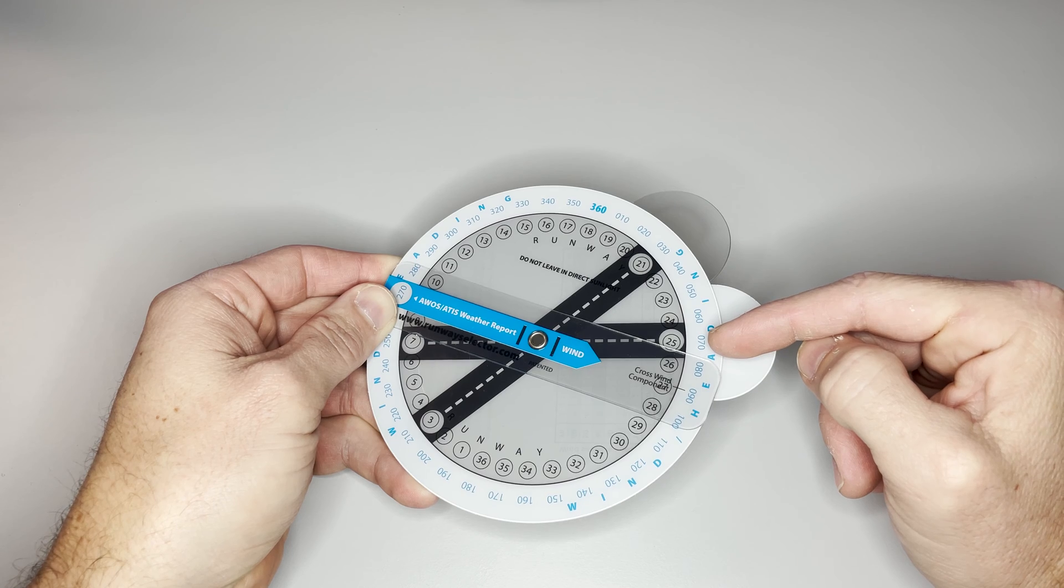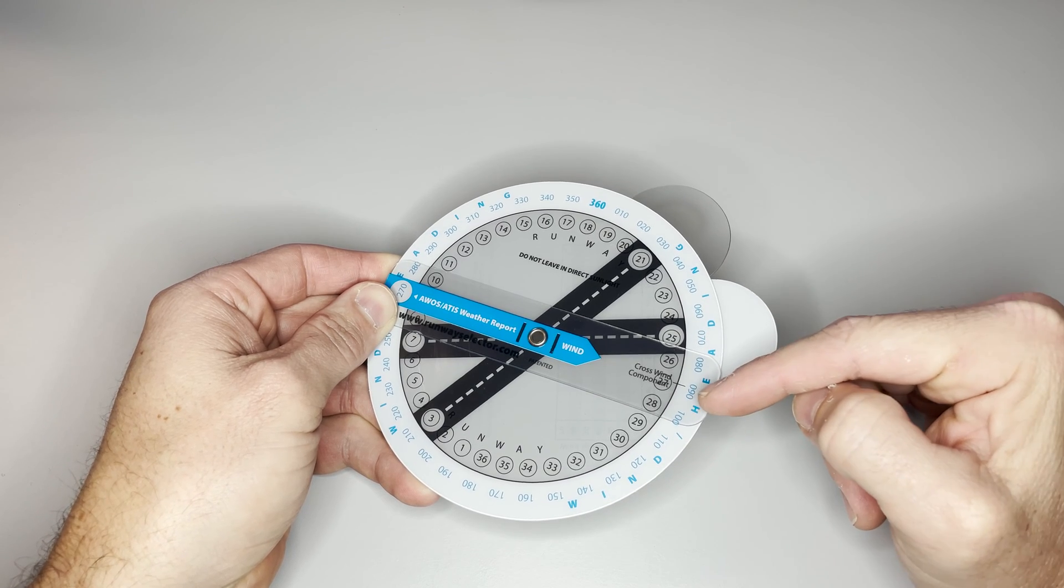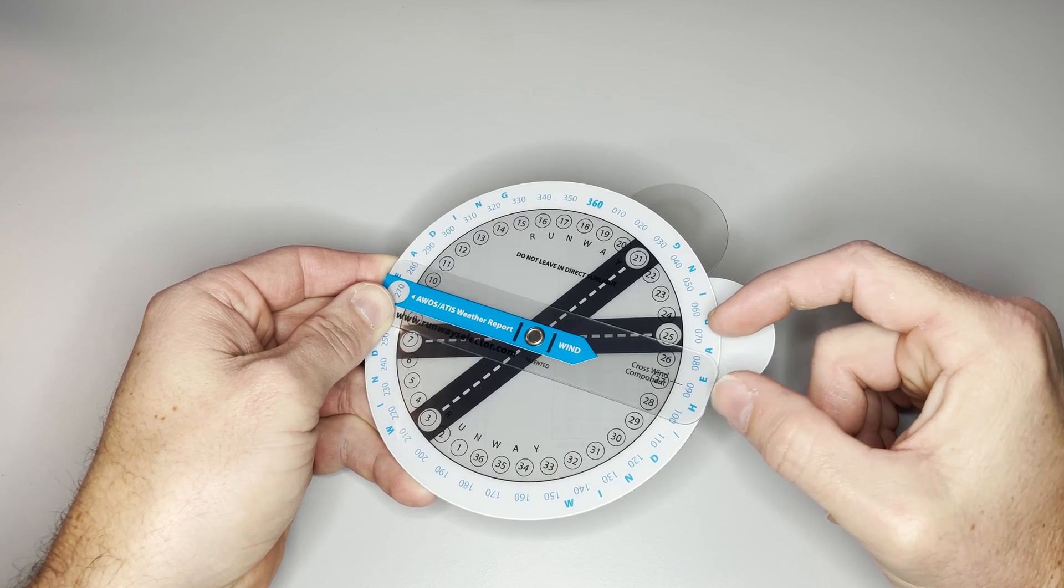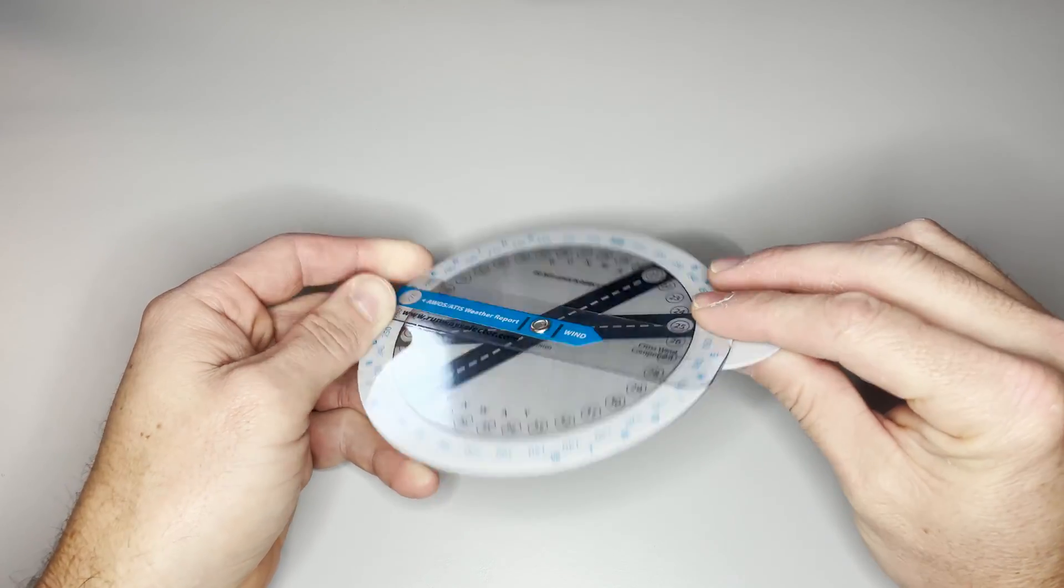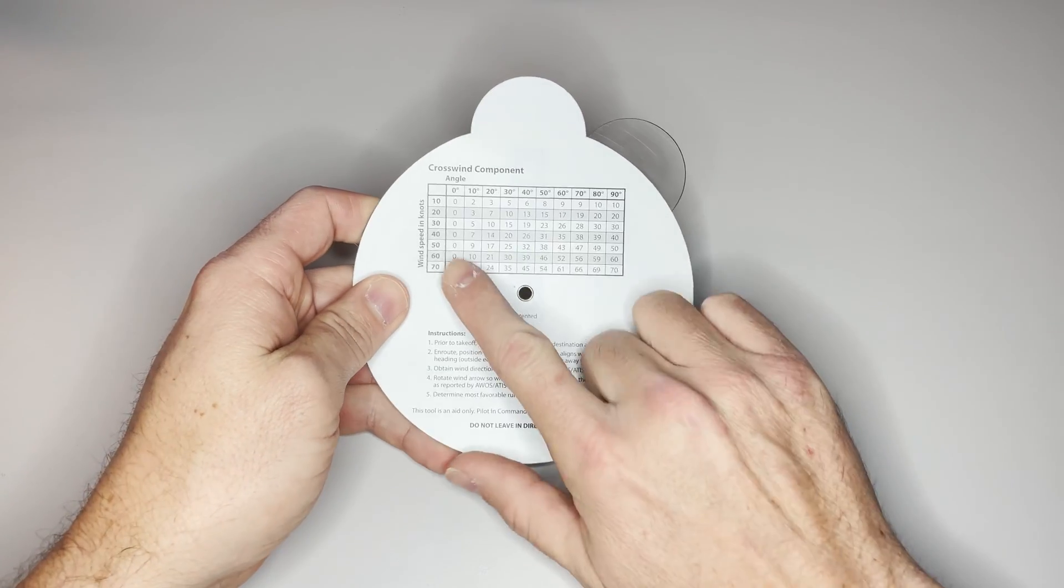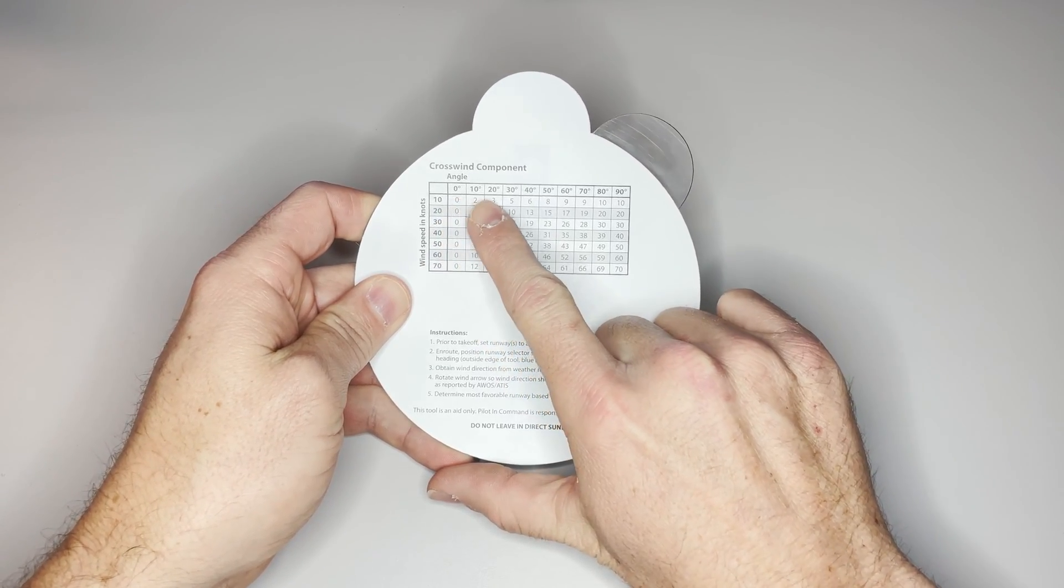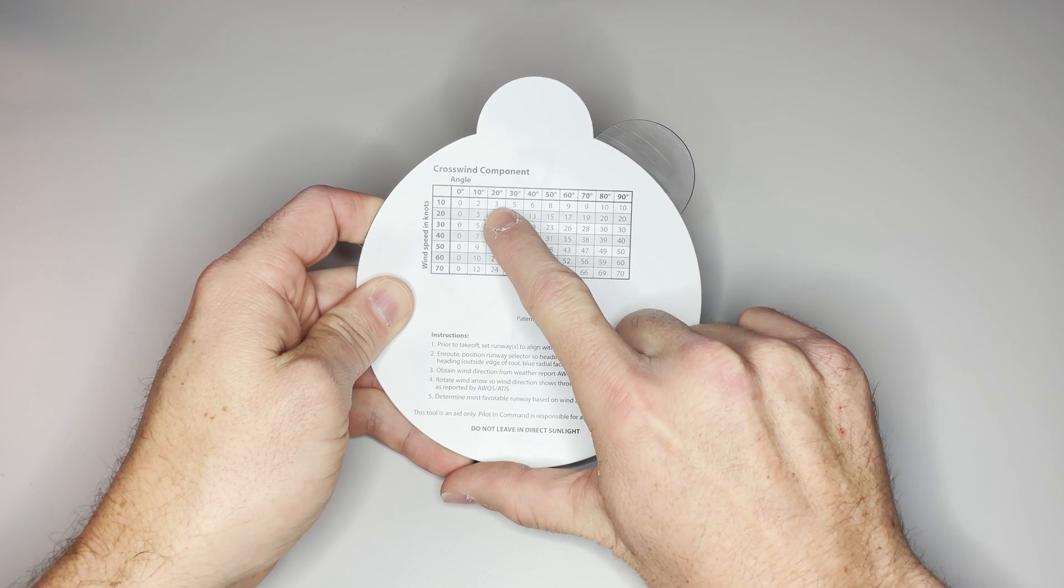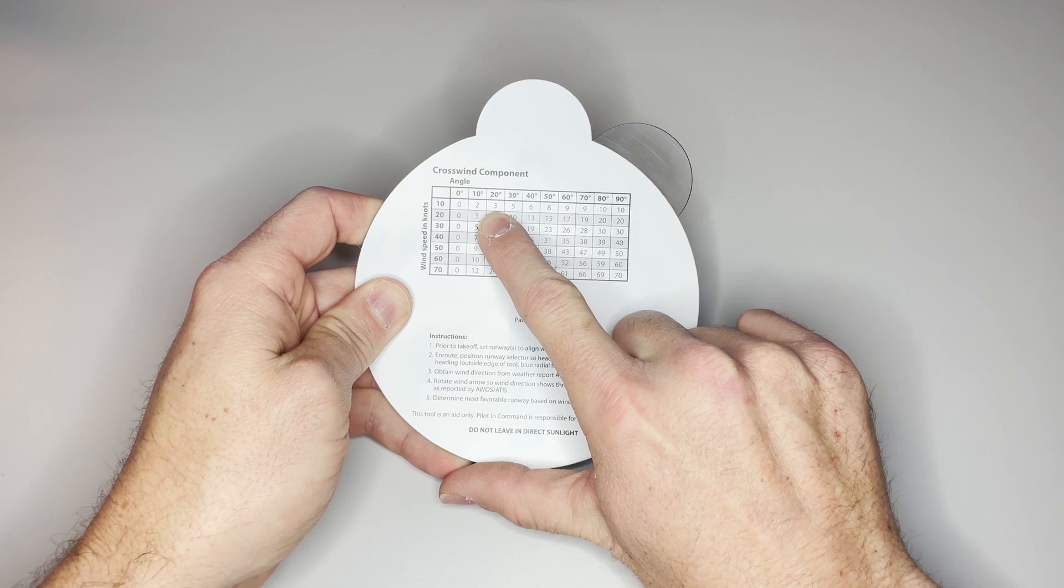You can see right here is 070 and the wind is at 090. There's a 20 degree angle between the runway and the wind. If we flip over the calculator, there's this handy little chart. If I follow over to 20 degrees and follow down to 10, it will tell me that the crosswind component is around 3 knots.